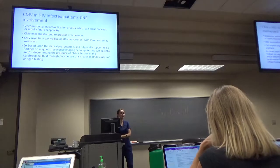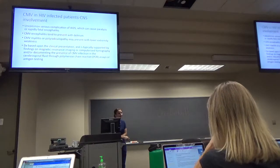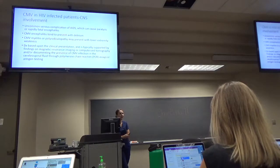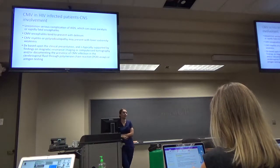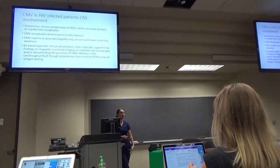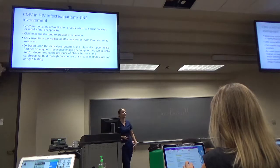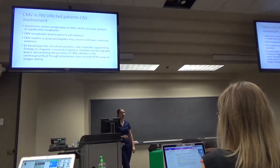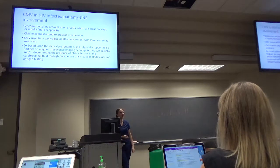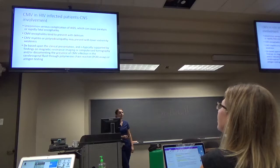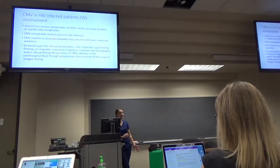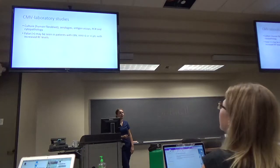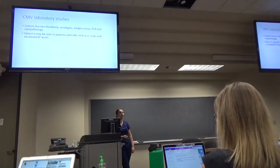CNS involvement is actually uncommon, but it does occur. If there's central nervous system involvement, they can have encephalitis, the brain involved, myelitis, or polyradiculopathy — which is what my patient most likely had, where multiple nerve roots were affected, causing weakness and muscle wasting. After many weeks of hospitalization, physical therapy could not get him back up due to how weak he was, and he ended up wheelchair-bound. If there's CNS involvement, you can isolate it in the cerebrospinal fluid.